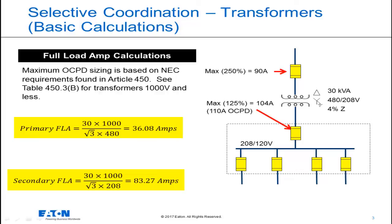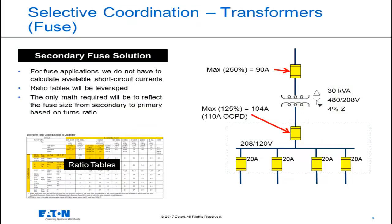The standard overcurrent protective device sizes can be found in Article 240 of the National Electrical Code. Table 240.6a from NEC 2017 gives you the standard ampere ratings for fuses and inverse time circuit breakers. For fuse applications, we do not have to calculate short circuit currents. We know we will not exceed the 200,000 amp interrupting rating of the fuse, and selective coordination with fuses relies solely on ratio tables. The only tricky math is reflecting the secondary branch fuse amp rating to the primary via the turns ratio.